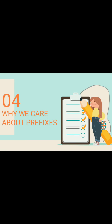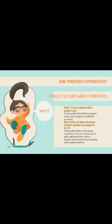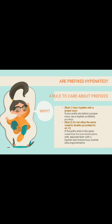Four, why we care about prefixes. Are prefixes hyphenated? Four rules to care about prefixes. Rule 1: Use a hyphen with a proper noun. If your prefix sits before a proper noun, use a hyphen — for example, un-British or pro-Nazi.